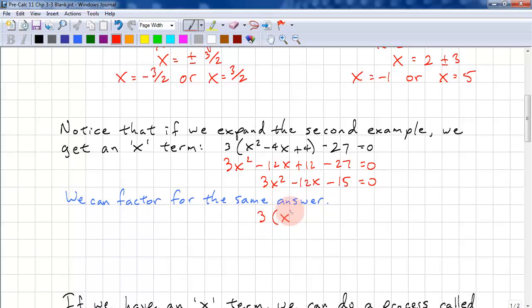3, factor 3 out, minus 4. And that's negative 5. Divide both sides by 3. We get x squared, negative 4x minus 5. And again, when it's one less than this constant term, we can easily factor this. So x equals 5, or x equals negative 1, which is the same answer here.